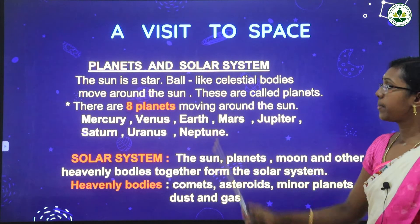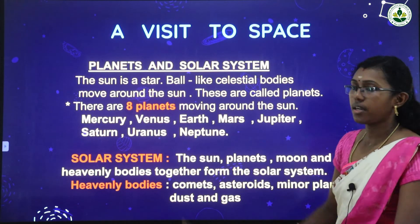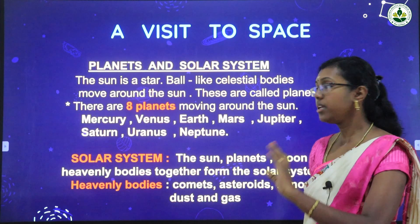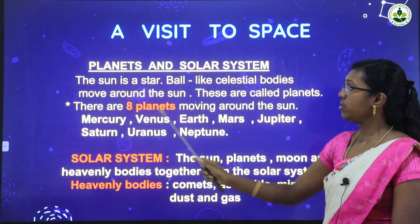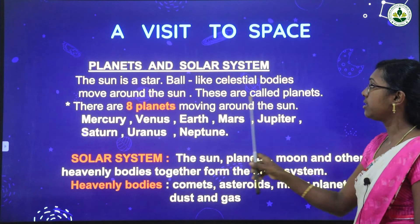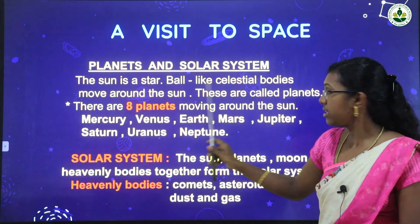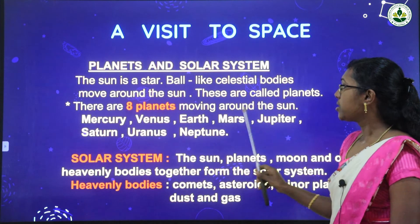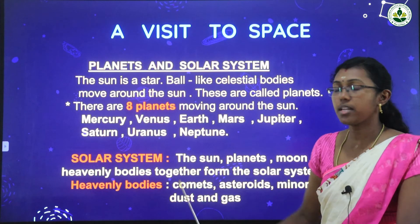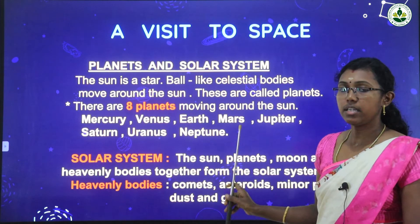Next, planet and solar system. The sun is a star. Ball-like celestial bodies that move around the sun are called planets. By looking at a picture of the solar system, you can see so many celestial bodies moving around the sun. There are eight planets: Mercury, Venus, Earth, Mars, Jupiter, Saturn, Uranus, and Neptune. You have to write the spellings in your notebook and learn them.